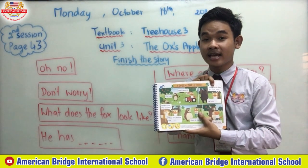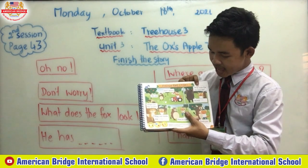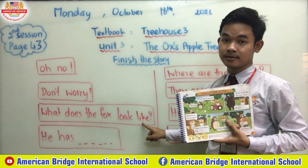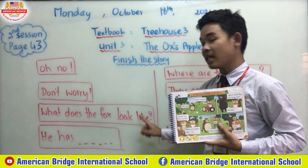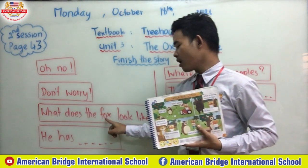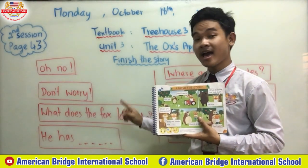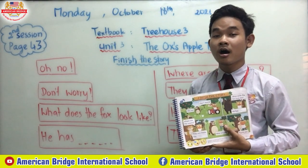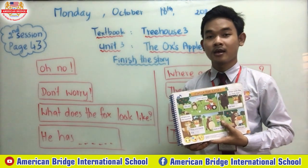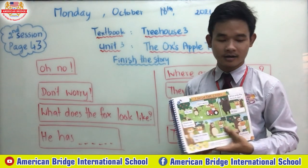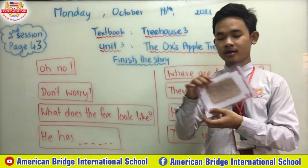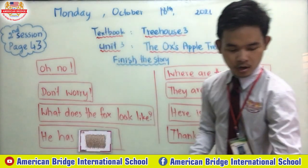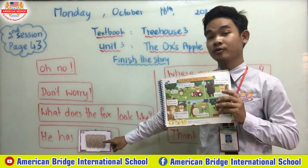Monty helped the ox look for the fox. He met the bear and asked: 'What does the fox look like?' The bear said he has — did you hear everyone? He has short orange fur. So now get your sticker for short orange fur and add it in the book over here.